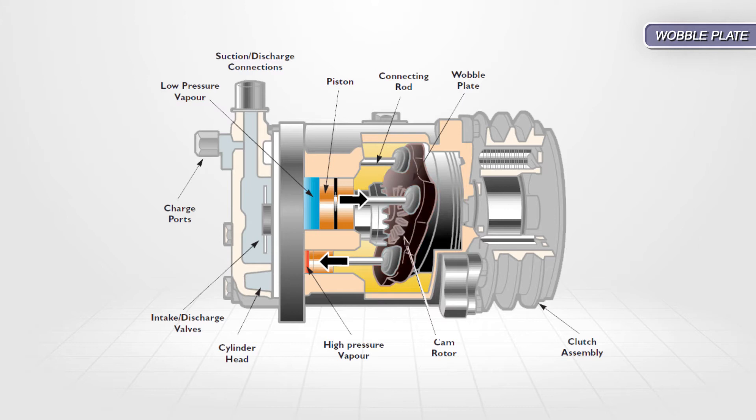The wobble plate fixed displacement design uses reciprocating pistons attached to a wobble plate by connecting rods. Rotation of the compressor shaft changes the angle of the wobble plate, causing the connecting rods and pistons to move in and out.